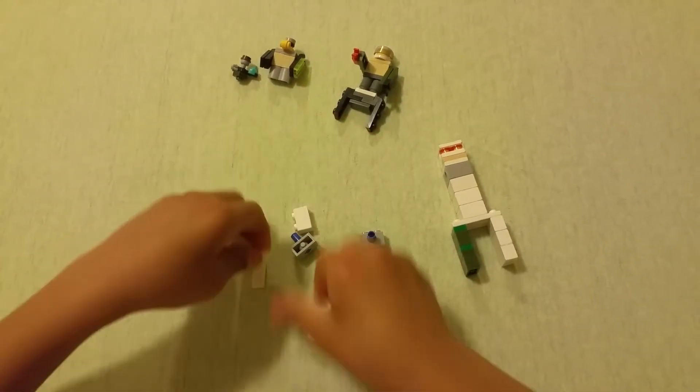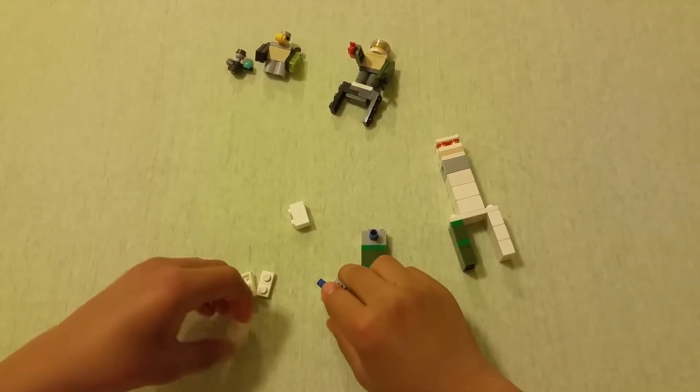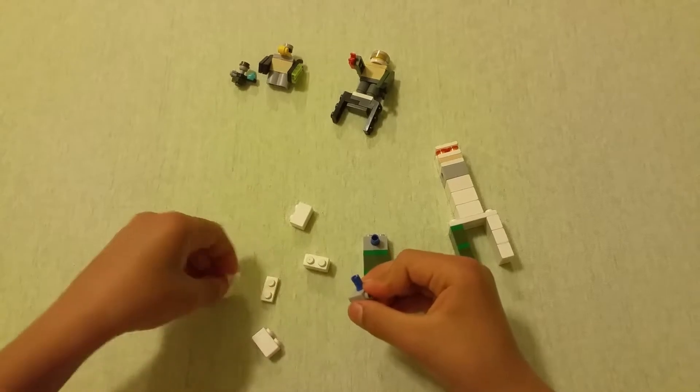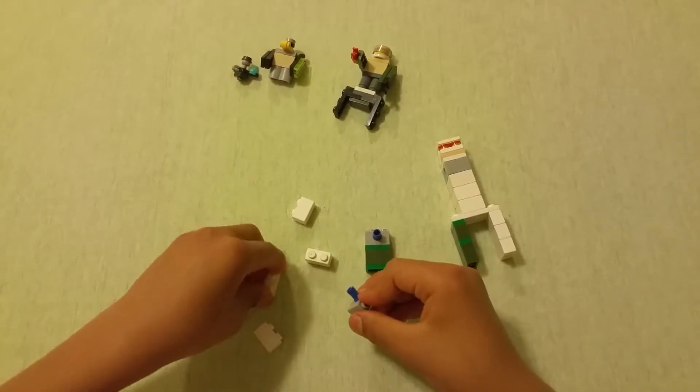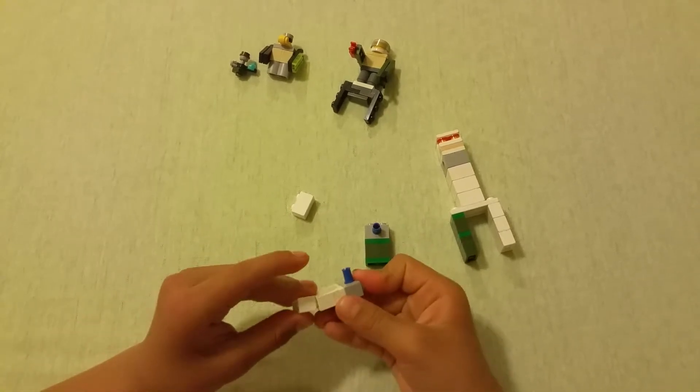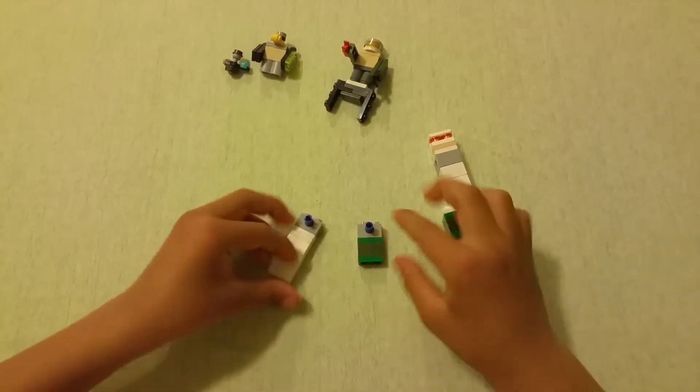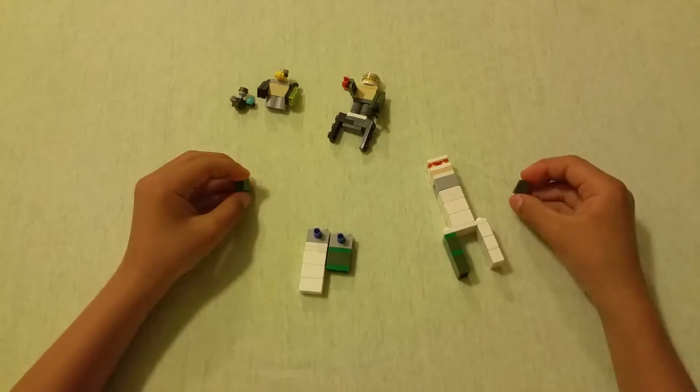Then for the other arm with no vines, 1x2 brick. Actually, no. I'm gonna stick some 1x2 plates first. Then the 1x2 brick, 1x2 brick, and the 1x2 brick.